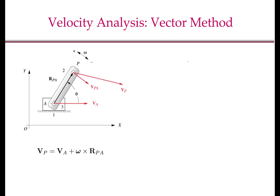To start with, let us look at the following problem. Consider a link AP whose motion is constrained by a pivot at A, which is moving at velocity VA. The angular velocity of the link is omega, positive in the counterclockwise direction and negative in the clockwise direction. The question is: what is the velocity of point P, denoted VP? From your dynamics class, you know that VP equals VA plus omega cross RPA, where RPA is the position vector of P with respect to A. Since this formula is very fundamental, let us see how we can obtain it.